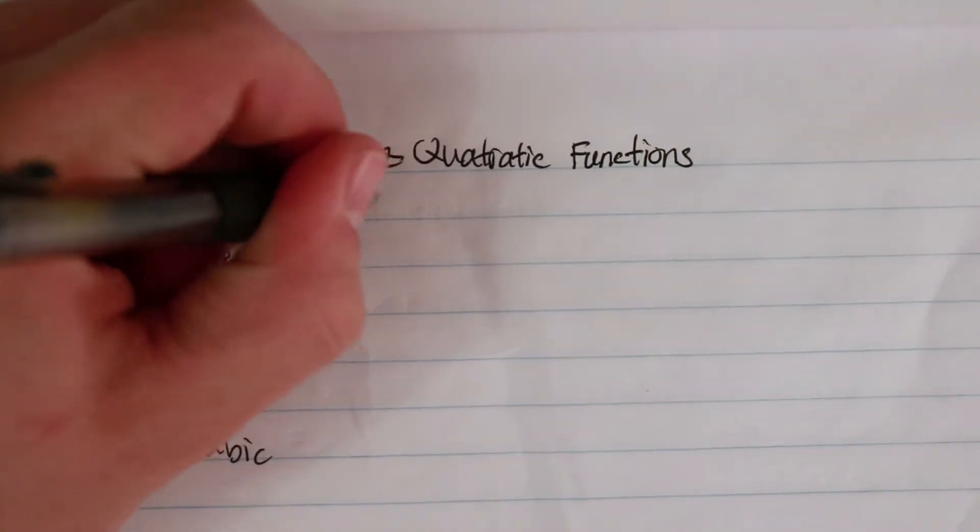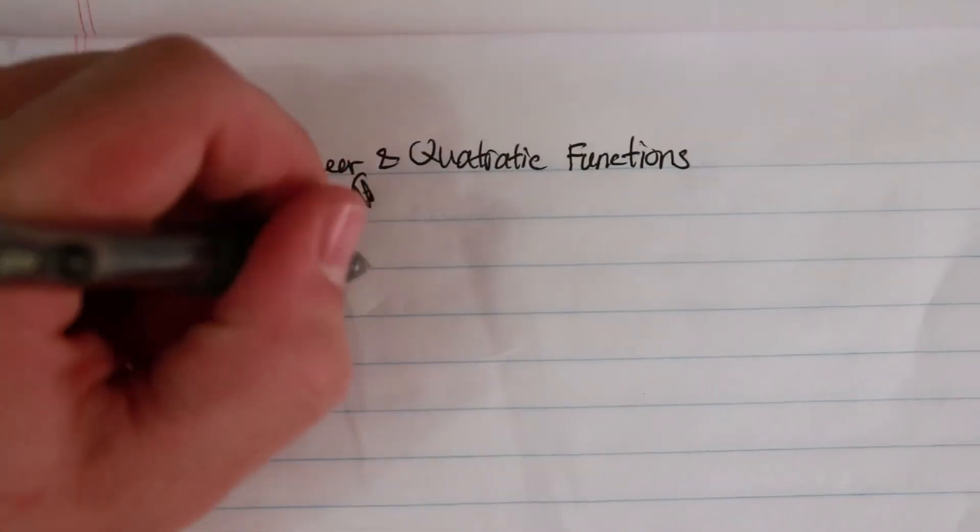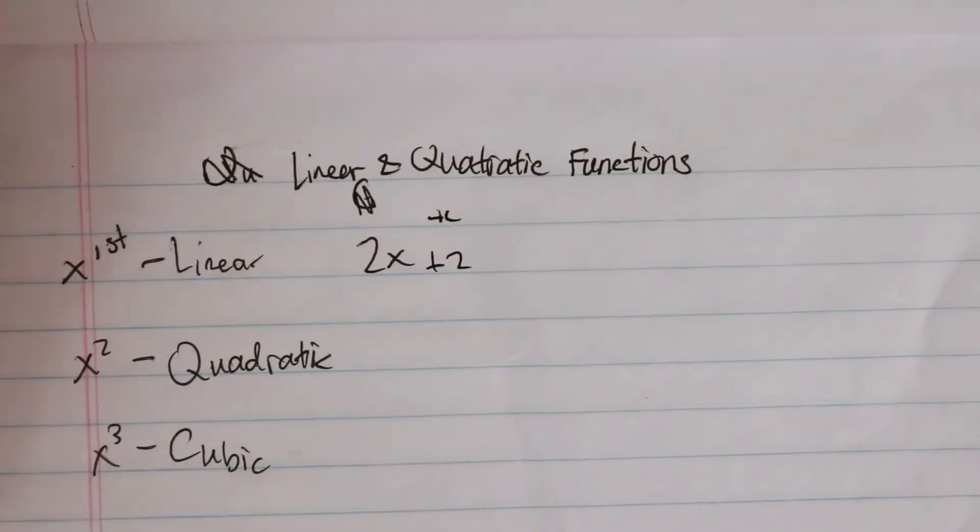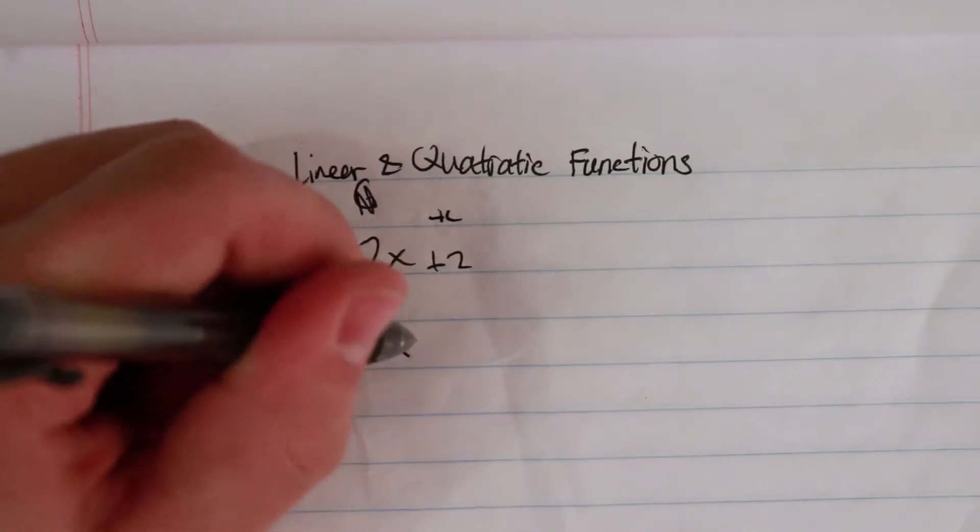What I want to do is take a look at what this equation actually looks like. This could look like 2x plus 2, with a constant. Quadratic could look like x squared.